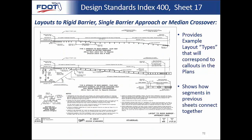Going into the fourth quarter, we move to Sheet 17, which shows layouts to rigid barrier — examples for the contractor of how all the various segments we've discussed fit together. Previous slides covered our approach transitions: rigid barrier on the left connected with approach transition length LA, and then on the right the approach terminal segment LE. Through the middle would be your typical section per the PPM. These example layouts also show how plan call-outs would correspond to what's shown, so contractors can see how it all fits together.